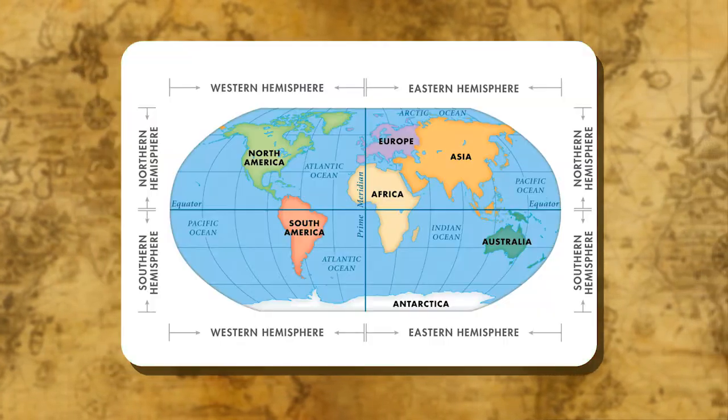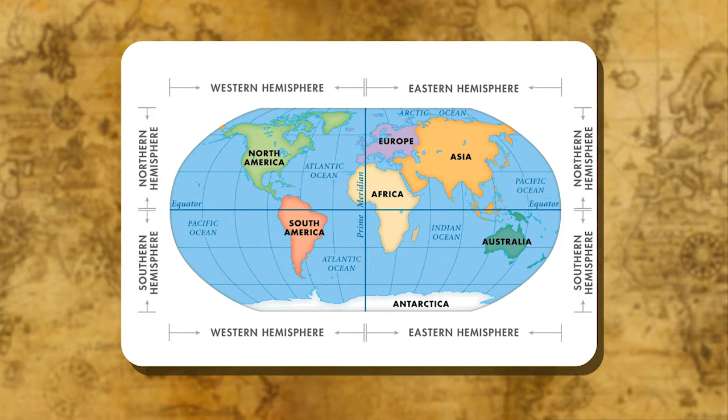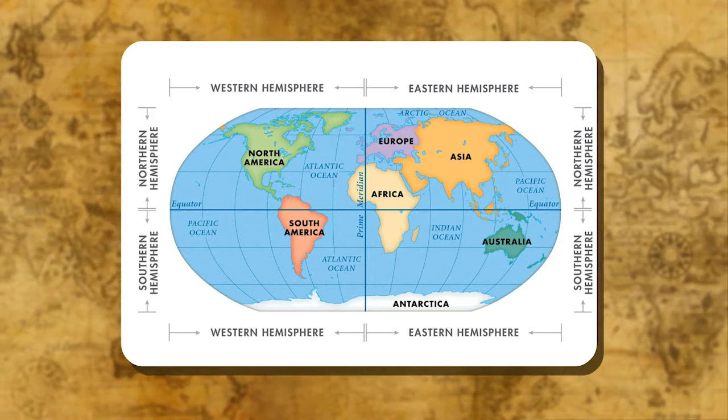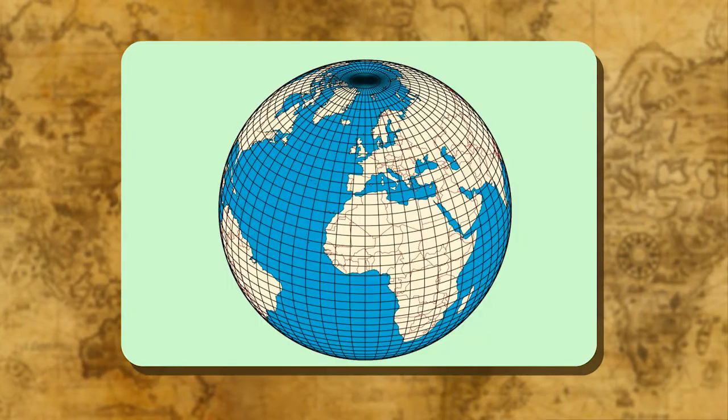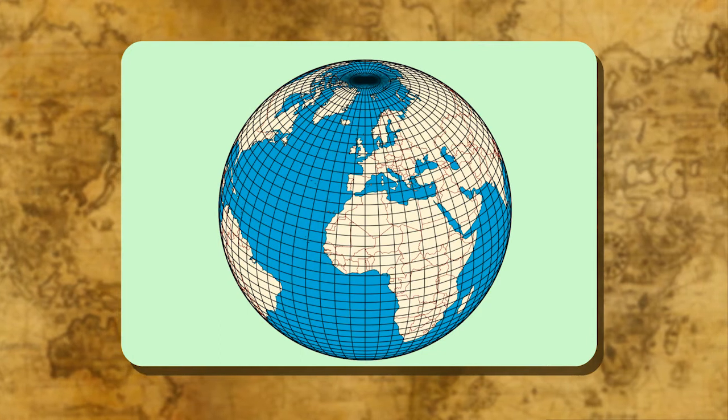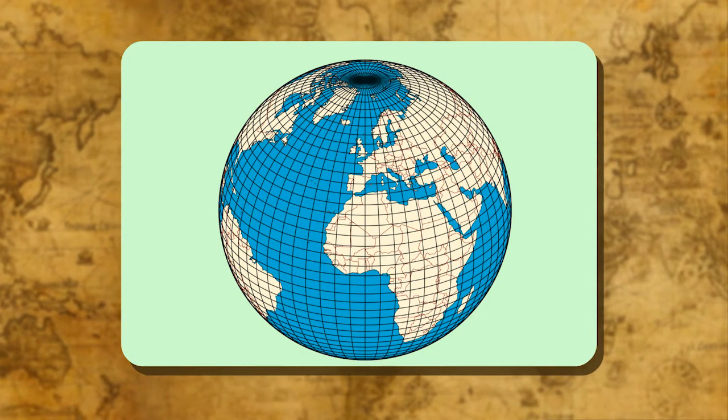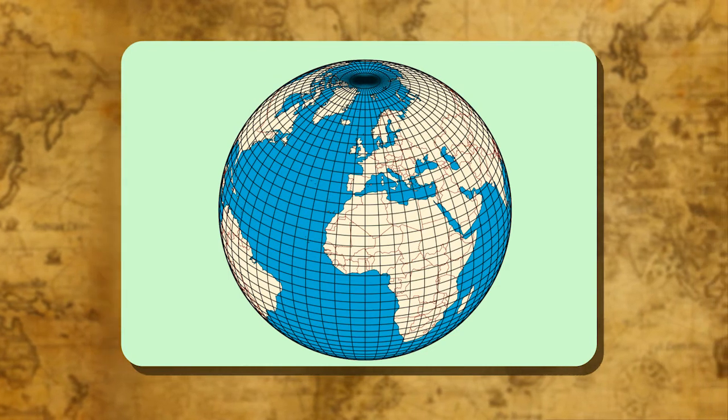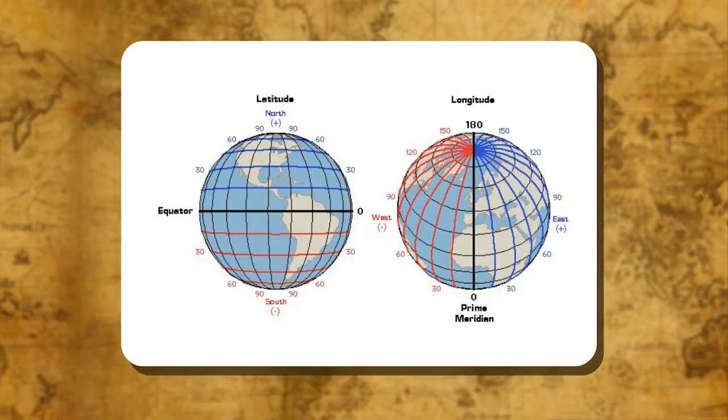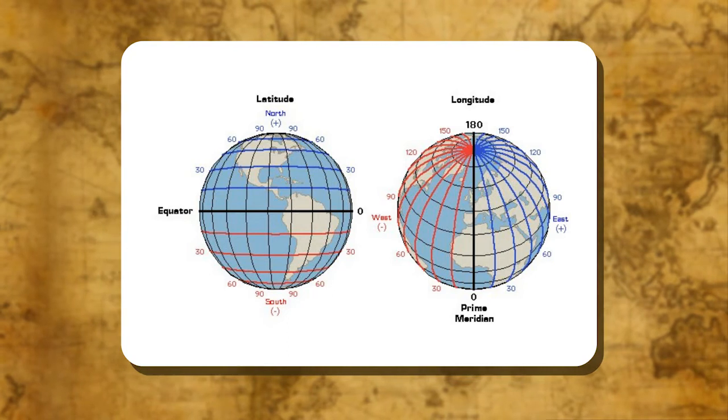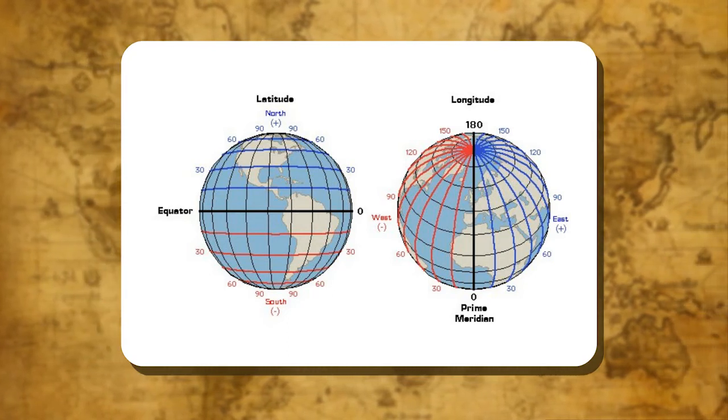The lines are marked off at an interval of 1 degree north and south up to 90 degrees. The total circumference of the earth is 360 degrees and the distance from the equator to either poles is one-fourth of the circumference. There are 90 lines to the north of the equator and 90 lines to the south of the equator.